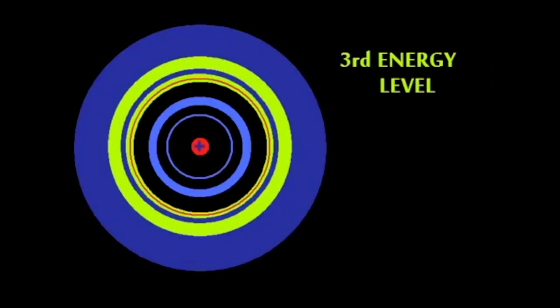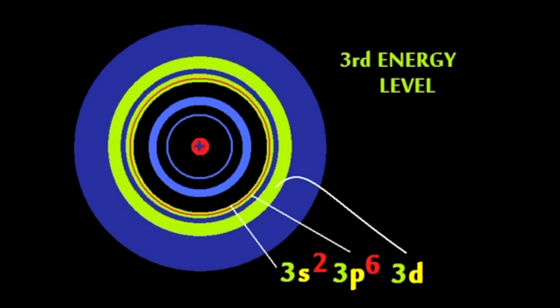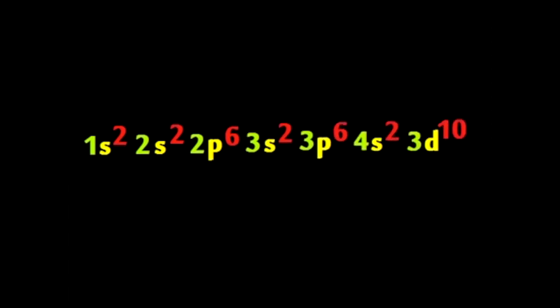The third shell is even larger, an s and p, top of the bill, a d sub-level is added on top, 10 electrons fit in d. 1s², 2s², 2p⁶, 3s², 3p⁶, 4s², 3d¹⁰.